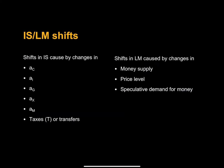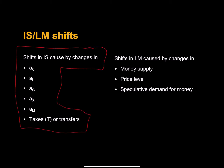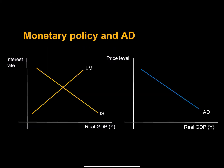Now let's use that to explain how aggregate demand changes when we change any of the determinants of the IS curve or any of the determinants of the LM curve other than price level. So here we are in some equilibrium — here's our real interest rate. Let's start here with our level of real GDP. We'll pick a hypothetical point on our aggregate demand curve and our hypothetical price level P0.